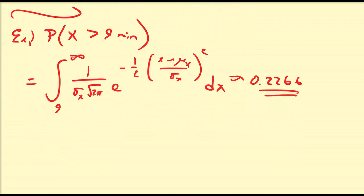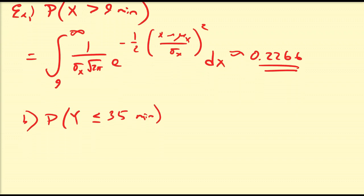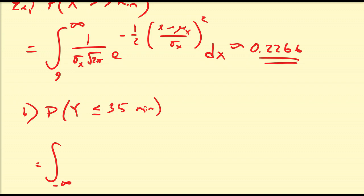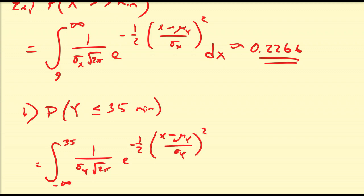Similarly, what is the probability that Y is less than or equal to 35 minutes — that is, the probability that your main exercise routine is less than 35 minutes? That's going to be equal to the integral from minus infinity to 35 of 1 divided by sigma_y times the square root of 2π, times e to the minus one-half of (x minus mu_y) over sigma_y, all squared, dx. Once you work out this numerical integral, that's going to be approximately equal to 0.802.